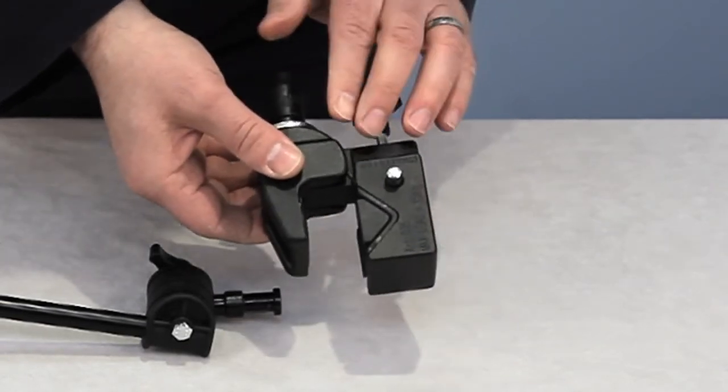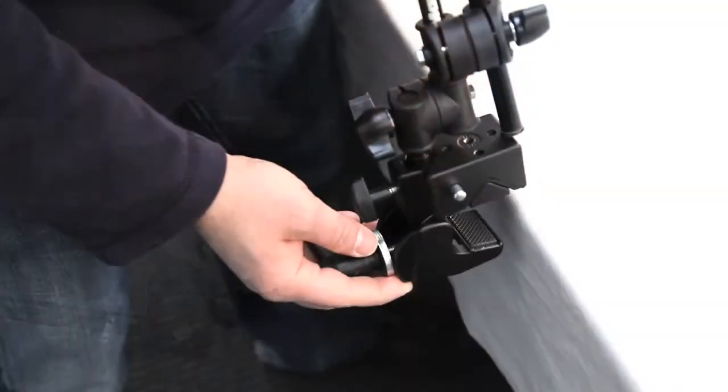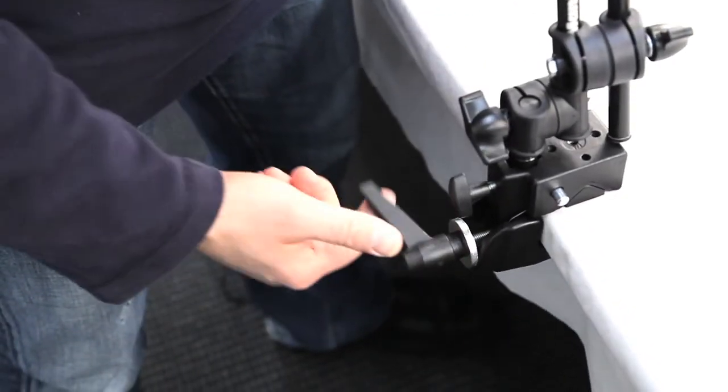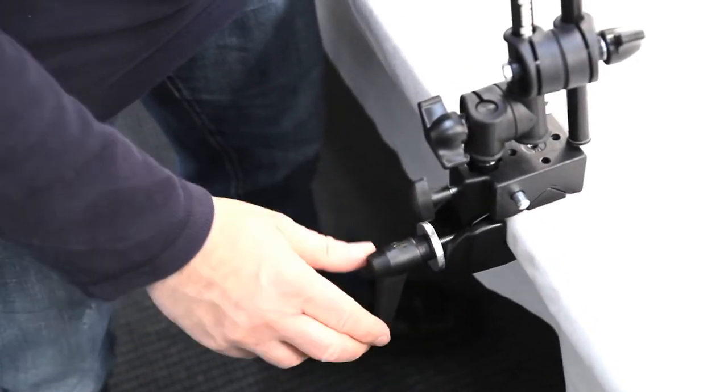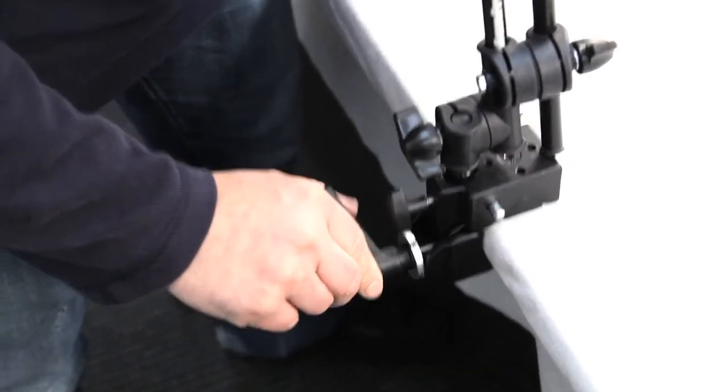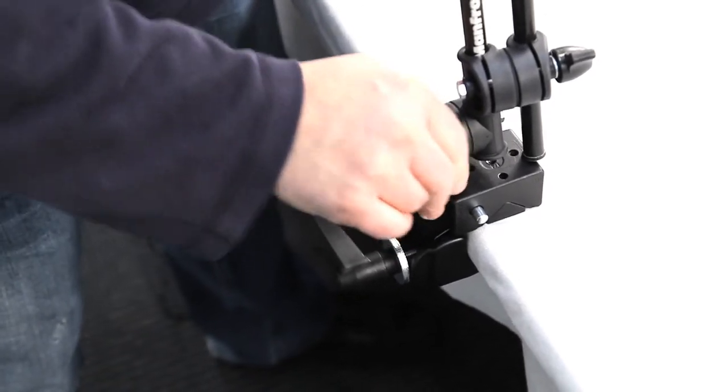So I'm going to actually show you how we mount this onto a table. So once you have this clamp opened up enough, just slip it onto your tabletop and just tighten down the clamp. And you don't have to really tighten too much so you get a good firm. This is not going anywhere.